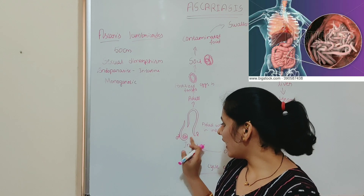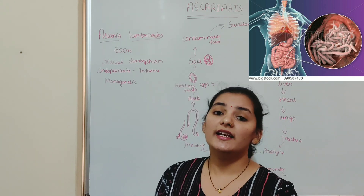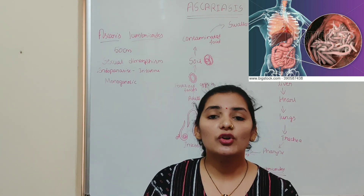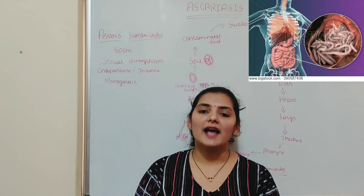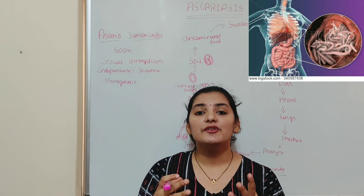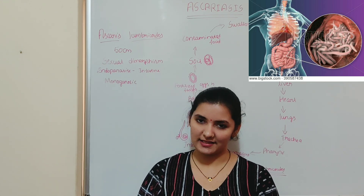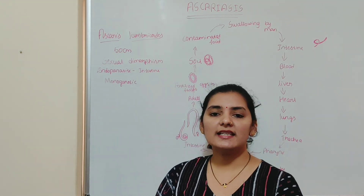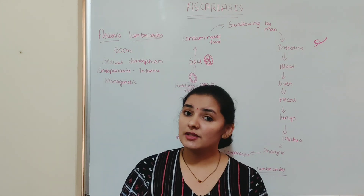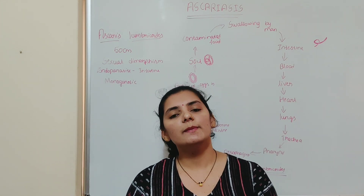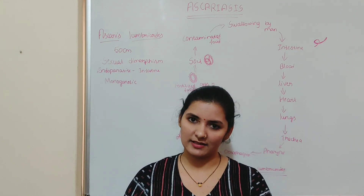Adult Ascaris lumbricoides, both male and female, are present and live in the intestine of man as an endoparasite, freely living in the lumen of the intestine. Ascariasis is mainly asymptomatic, but symptoms of this disease appear depending on the number of adult worms present in the intestine.